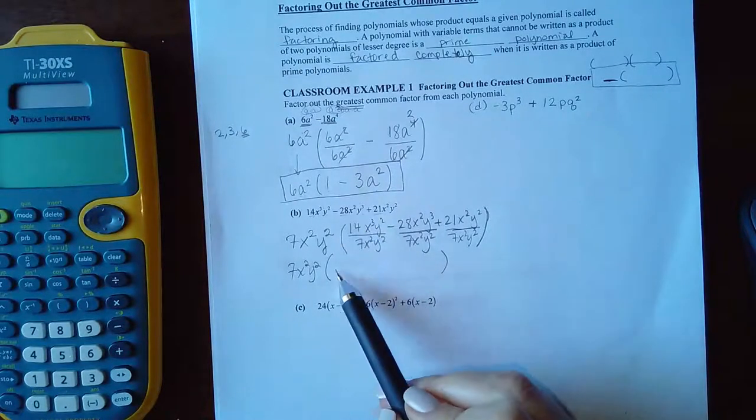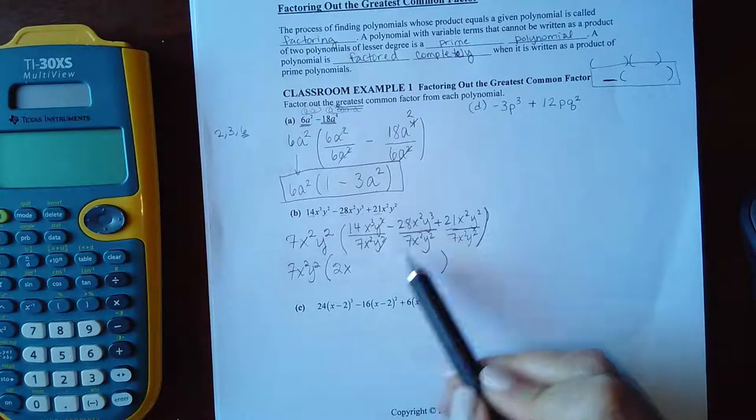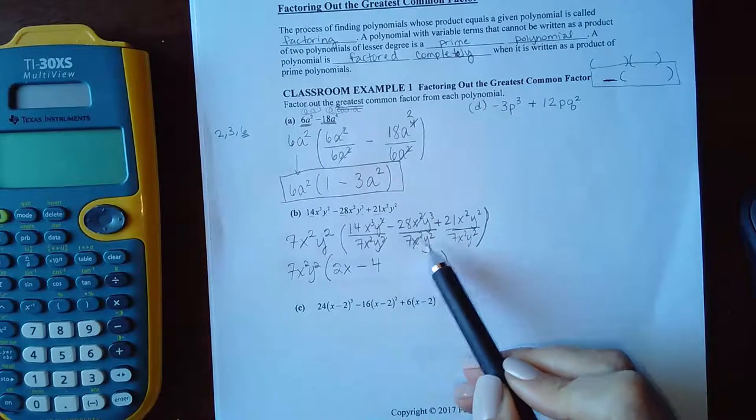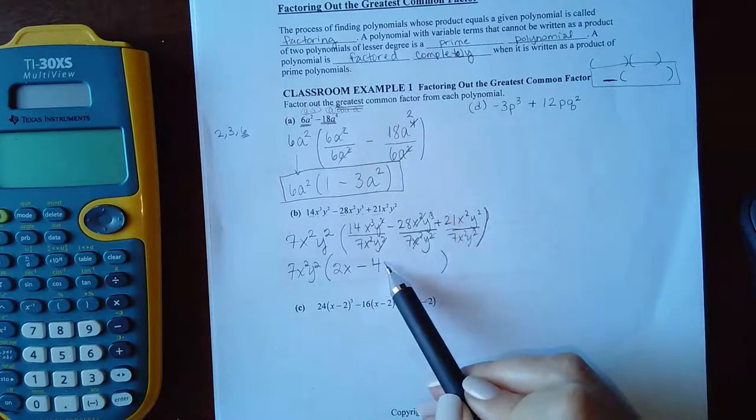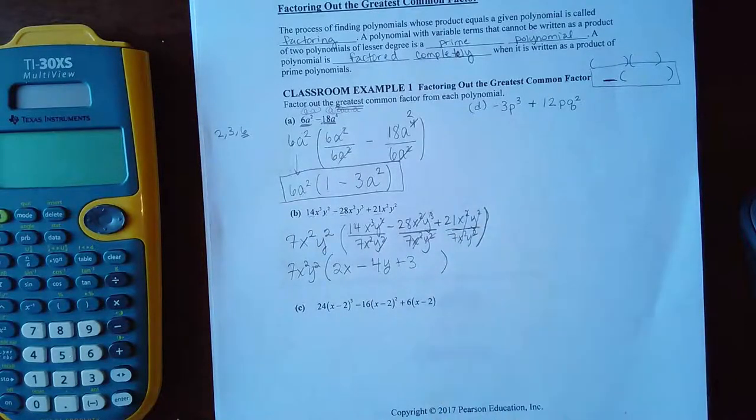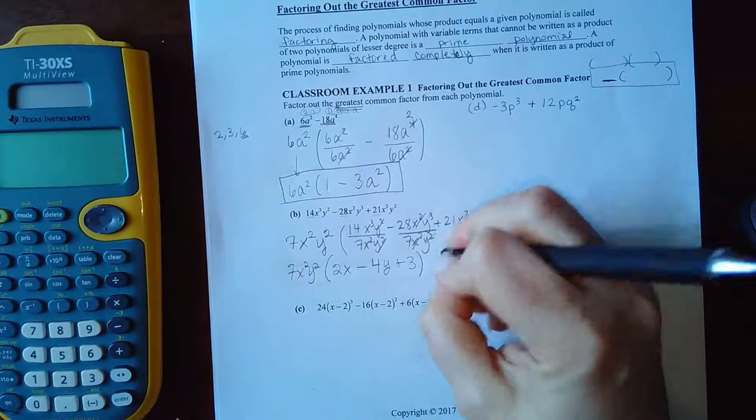So rewrite your GCF and then rewrite the leftovers. So 14 divided by seven is two. The Y squared's cancel. I'll still have an X left. Minus, that will be four. X squared will cancel. However, two will cancel, but I'll still be left with the Y. Here I get plus three. And both of the variables completely cancel out. So I'm just left with this expression.